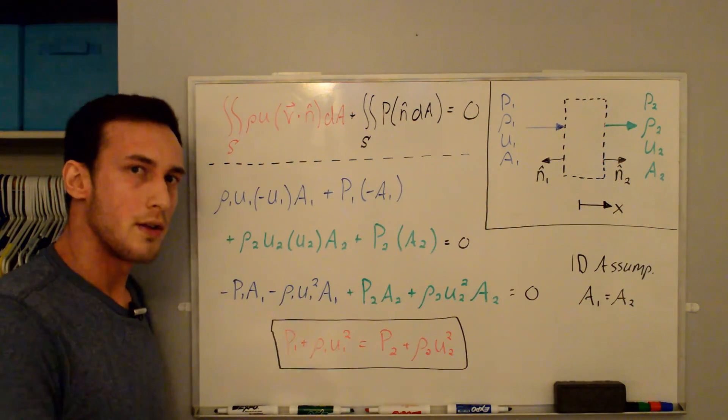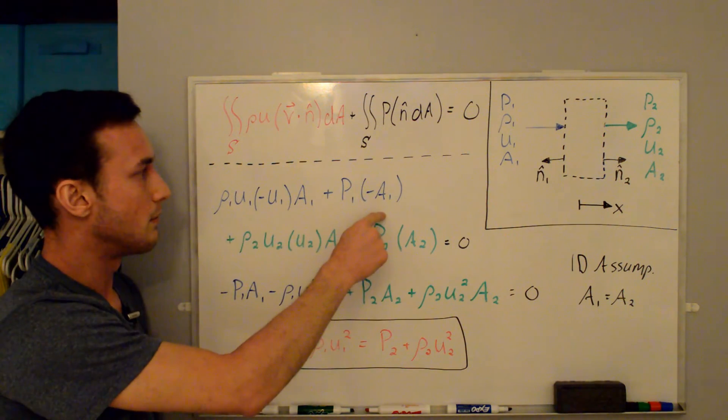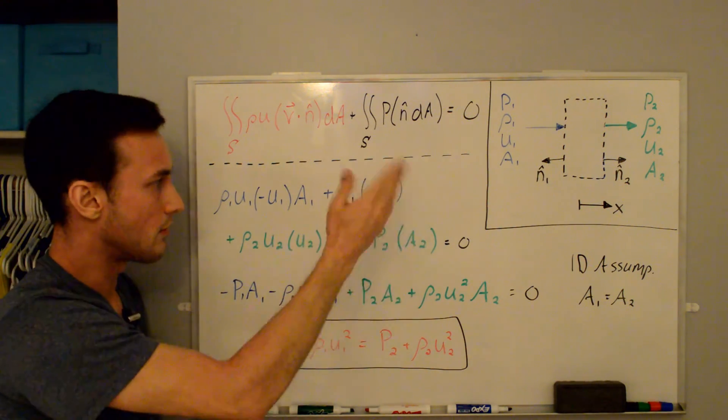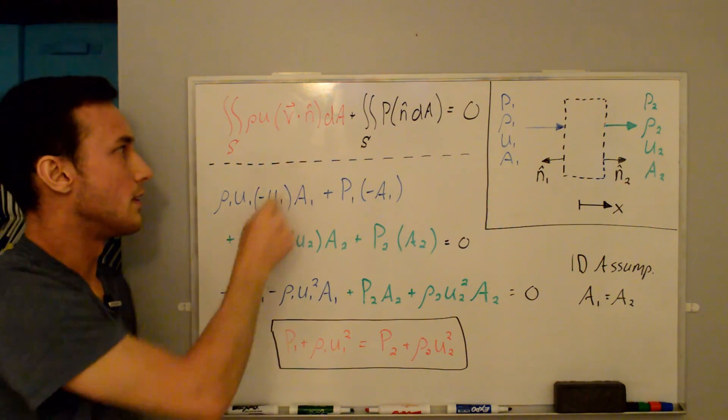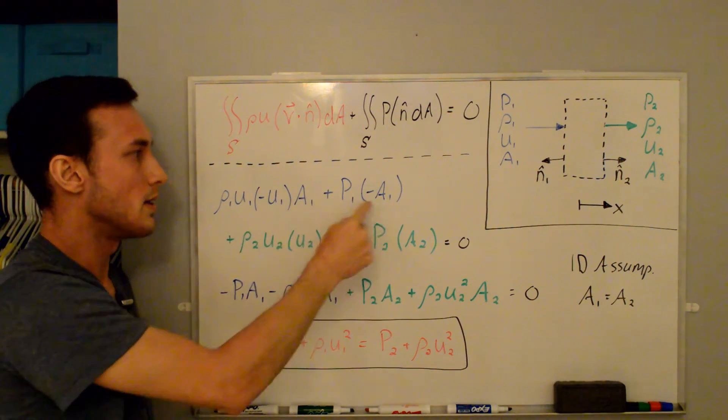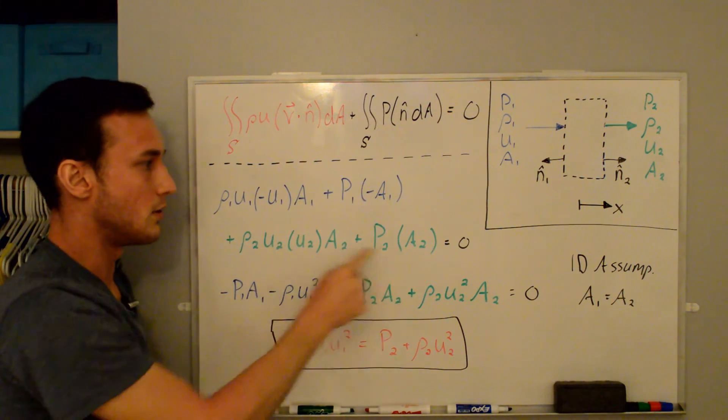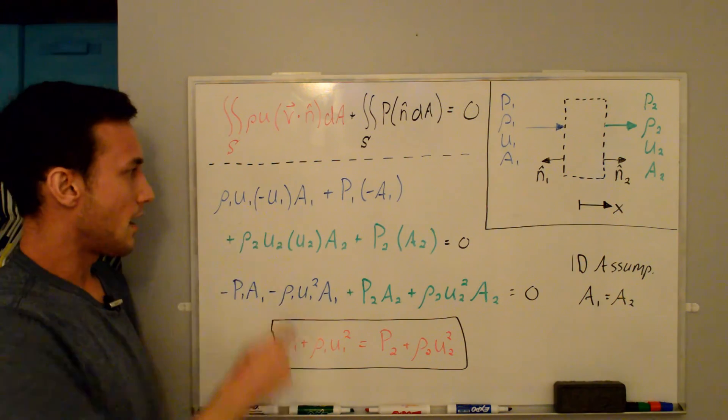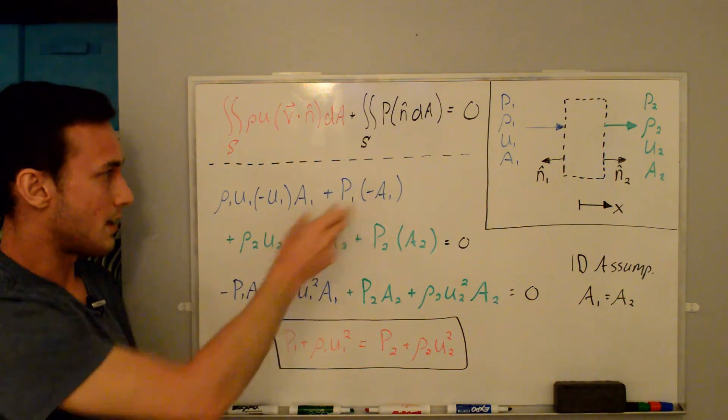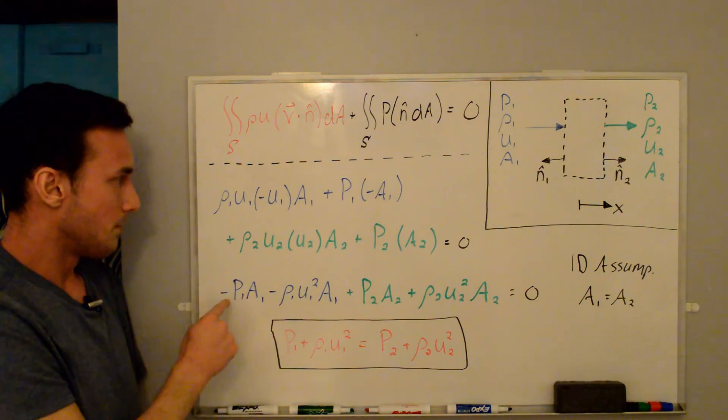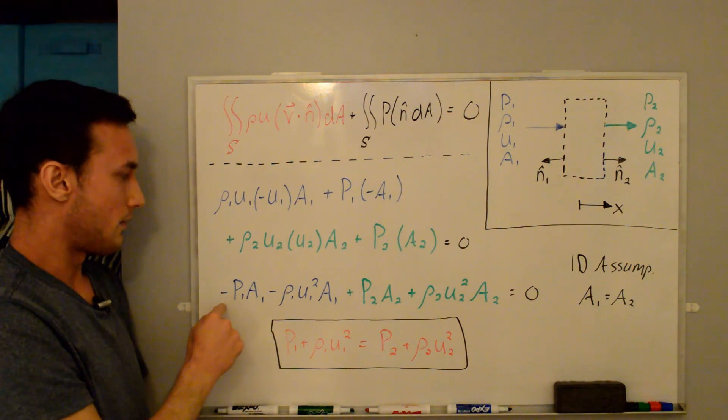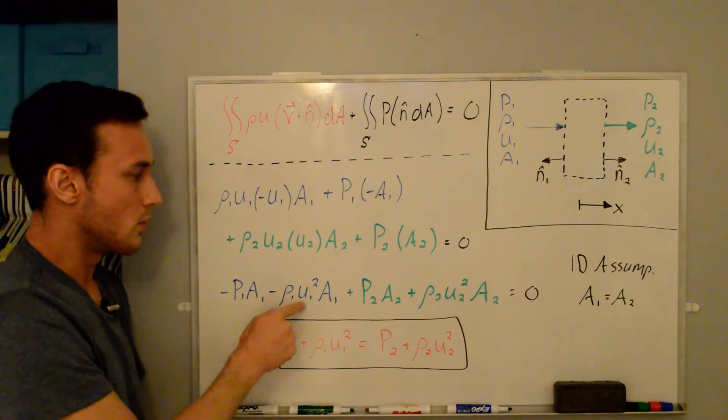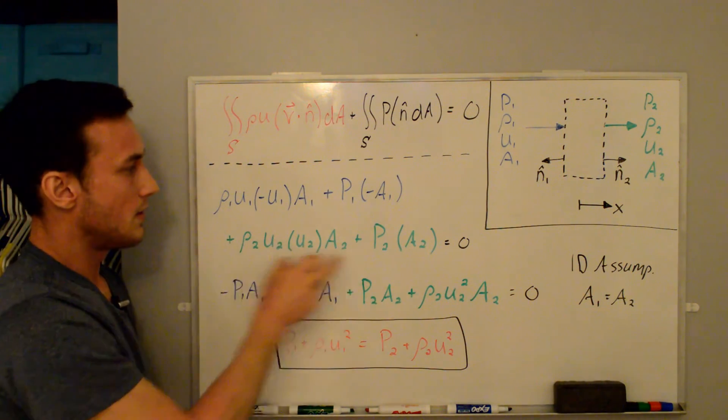So now you can see here the blue for the left side, green for the right side still. I've just substituted in that dot product with negative u1 and then negative a1 here. Positive u2, positive a2. And if we multiply this out, and I'm just putting this term first, we get negative p1a1 minus rho1u1 squared a1 plus these terms here, p2a2 plus rho2u2 squared a2 is equal to zero.